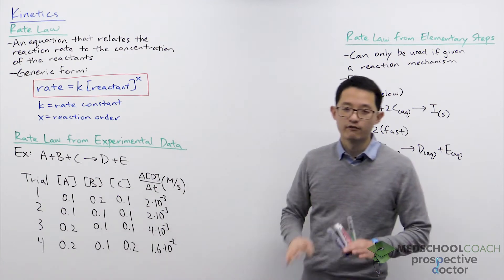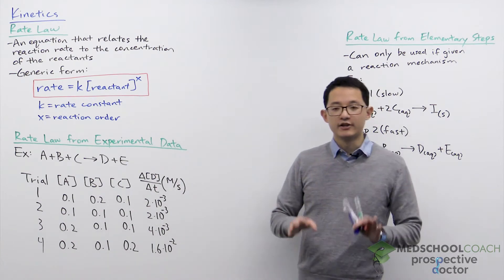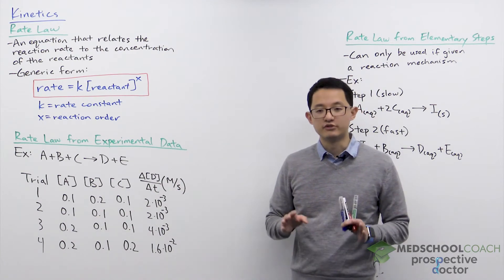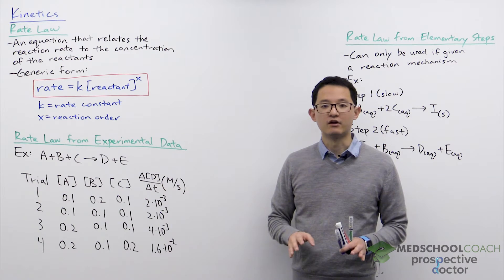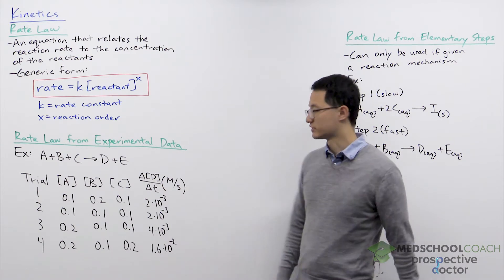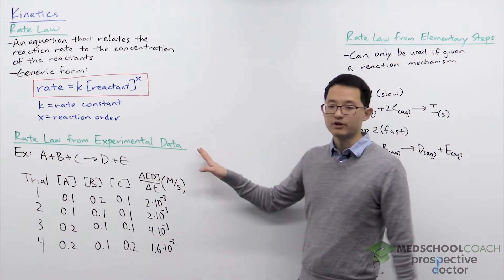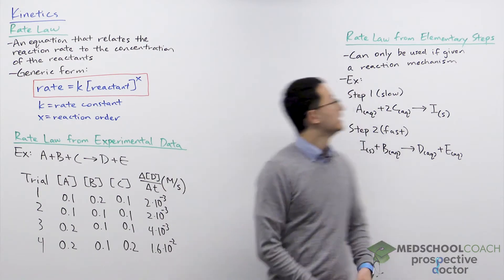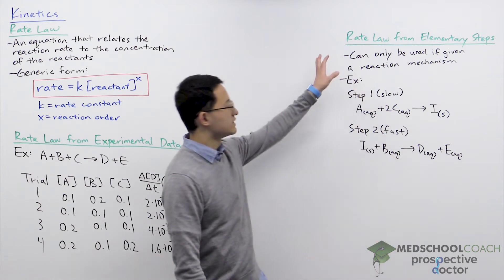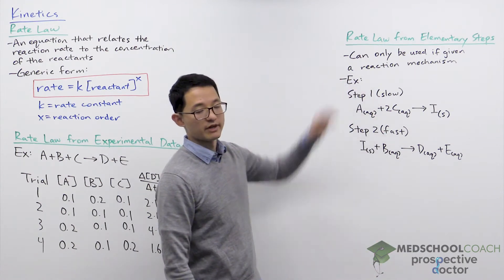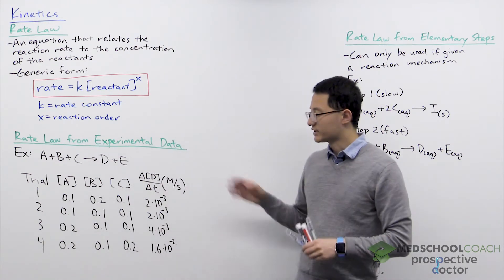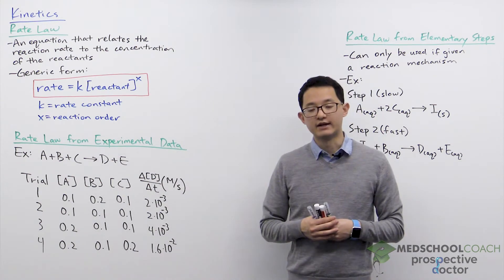For the MCAT you will be expected to be able to determine the rate law using two different approaches. One approach is using experimental data and the other is using elementary steps. We'll start with experimental data.